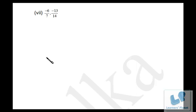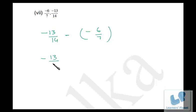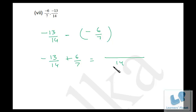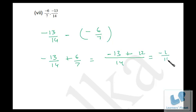Now in this case, we have to subtract this from this. So it's minus 13/14 plus 6/7. Take LCM — LCM of 14 and 7 is 14. Fourteen times one is 14, so one times 13 is 13 with a negative sign. Plus seven twos are 14, so two times 6 is 12. So minus 13 plus 12 is minus 1, and this is 14. I hope you are getting it.